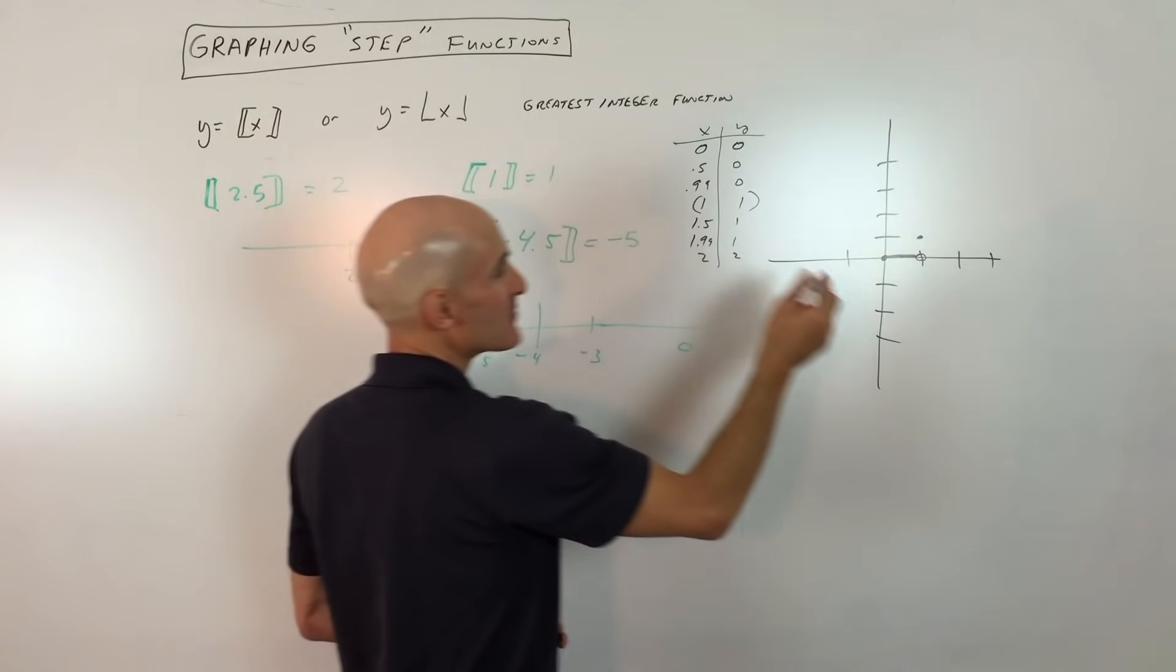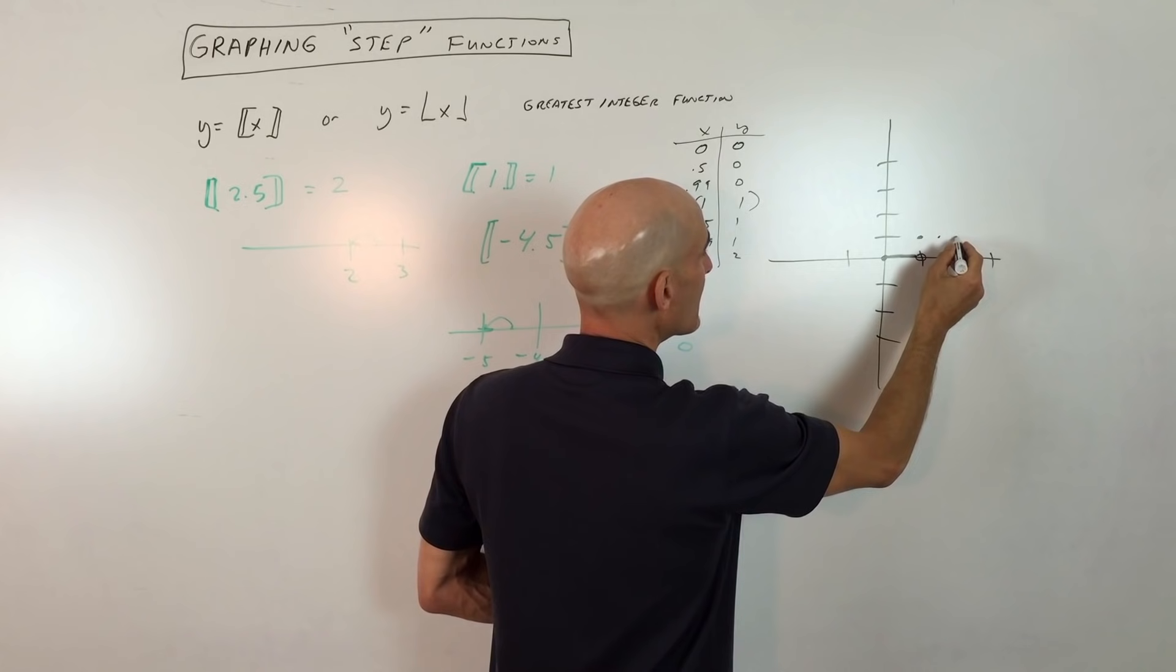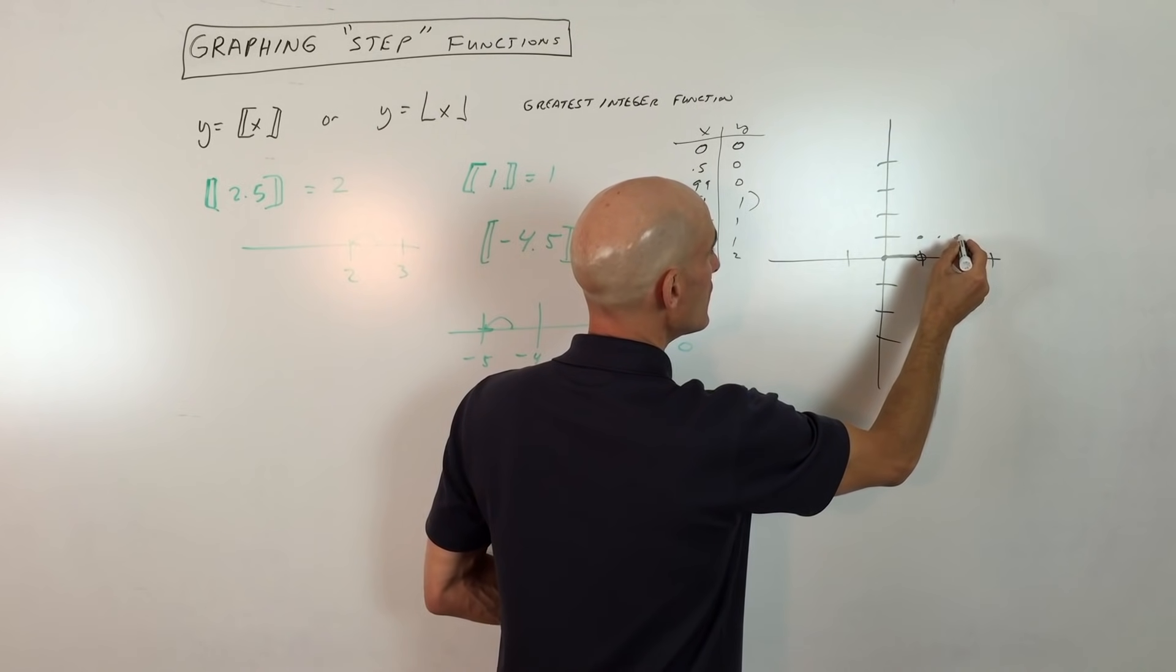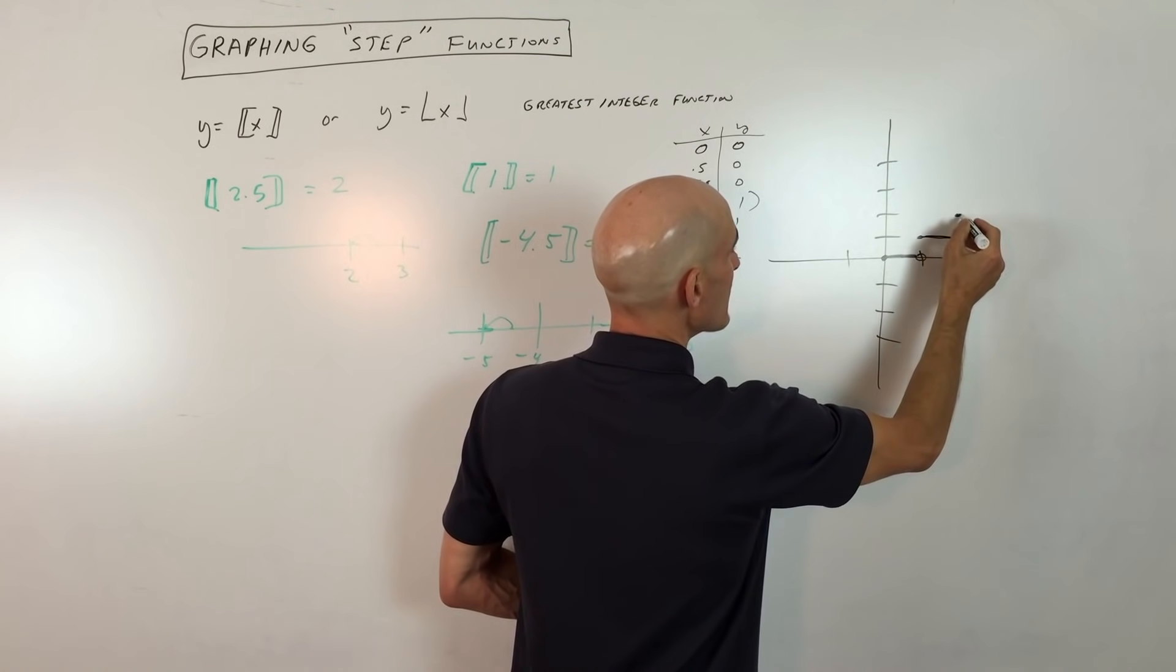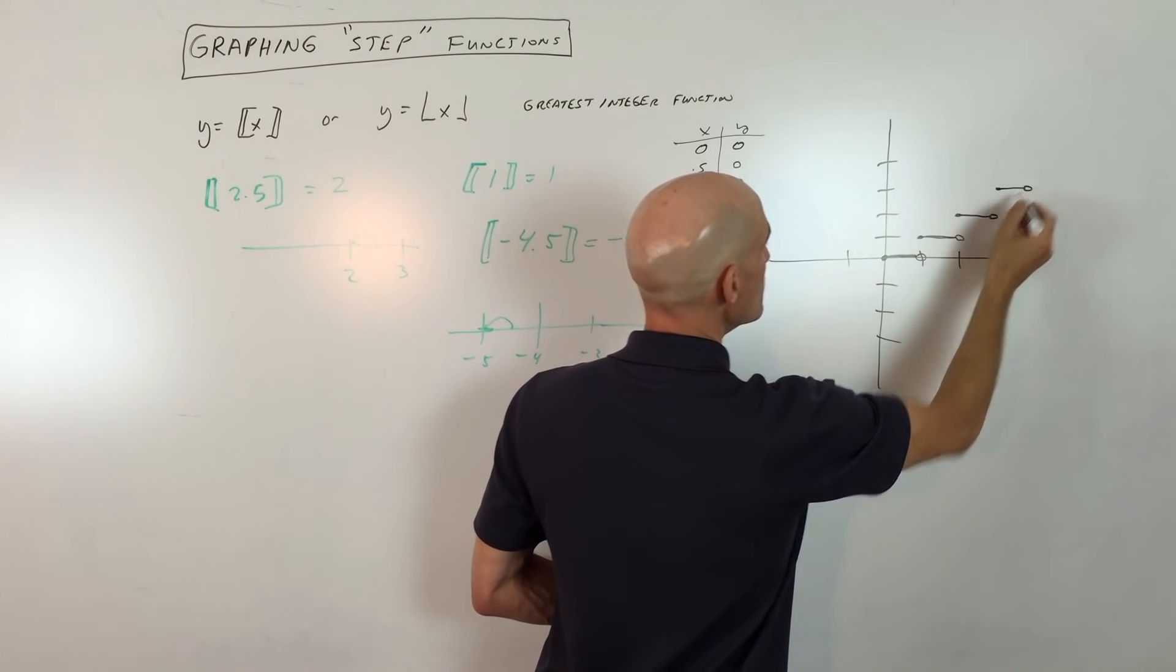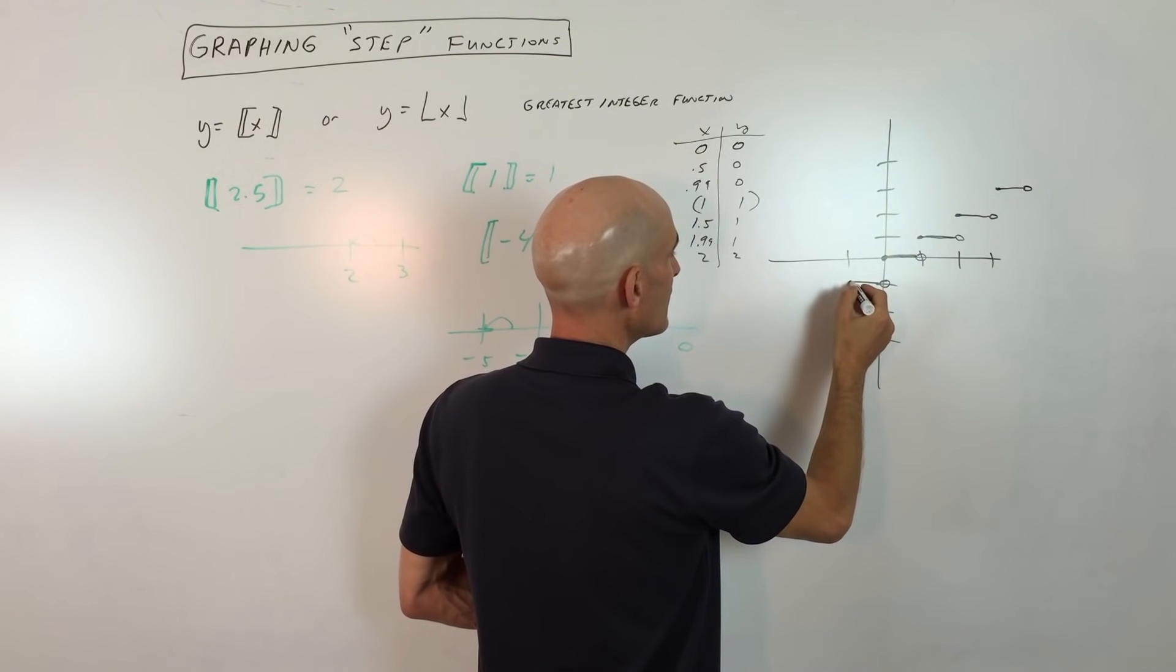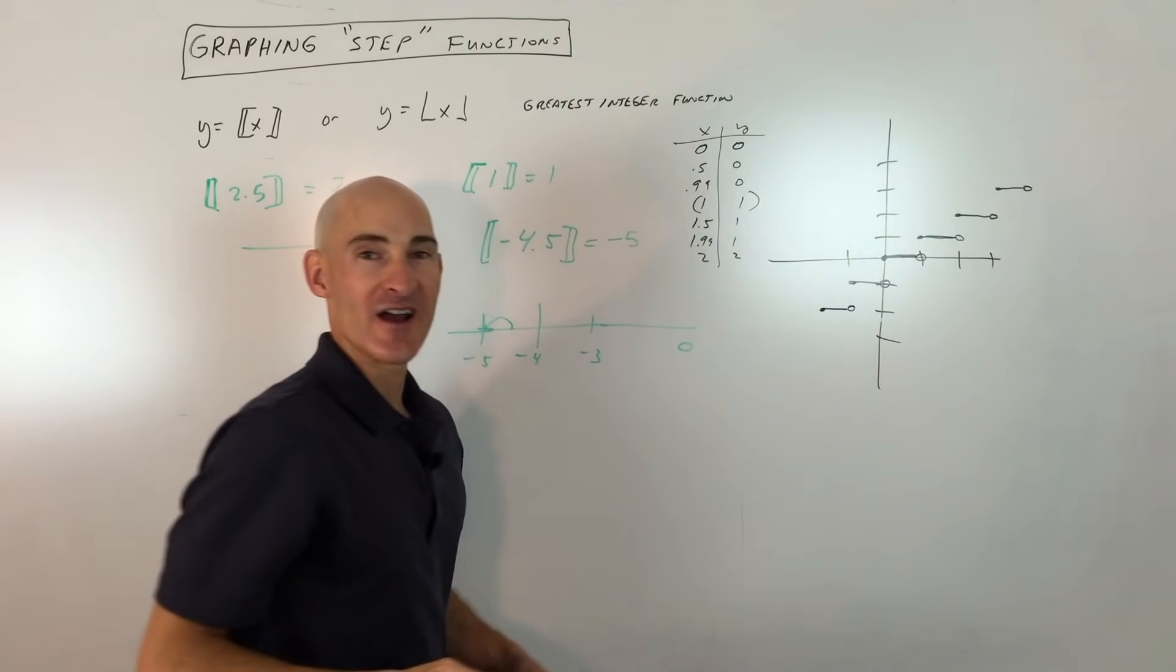So you go up here, you jump up to one. 1.5 you're going to be at one. 1.99 you're going to be at one. At two there's an open circle here because it jumps up to the next integer. So that's the next stair, and once you get a few of these stairs or steps going you can repeat the process both directions.